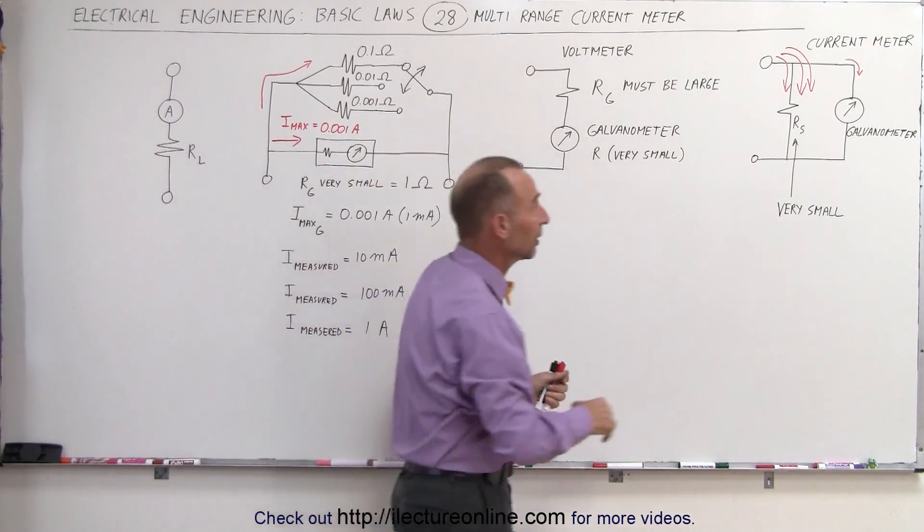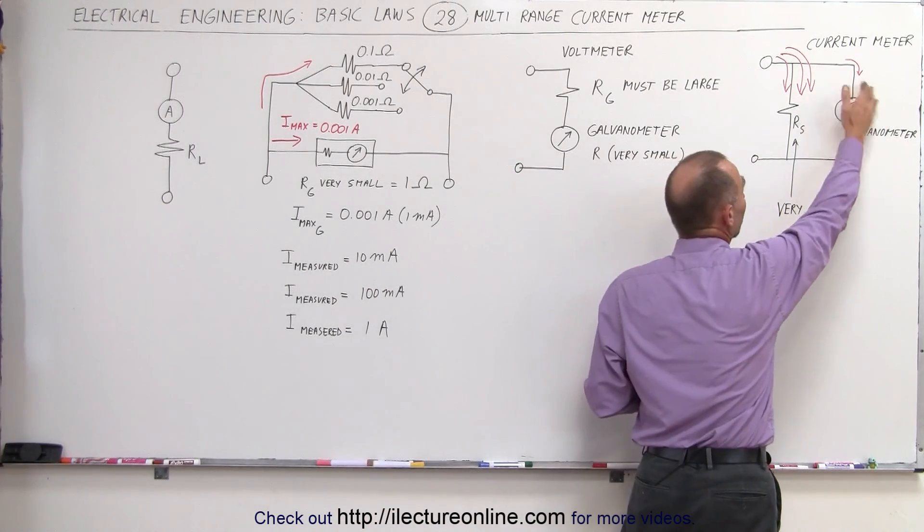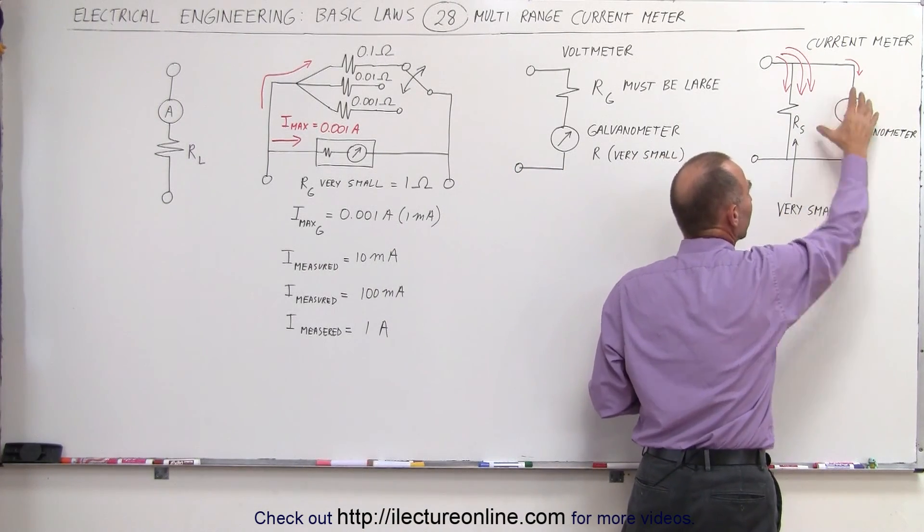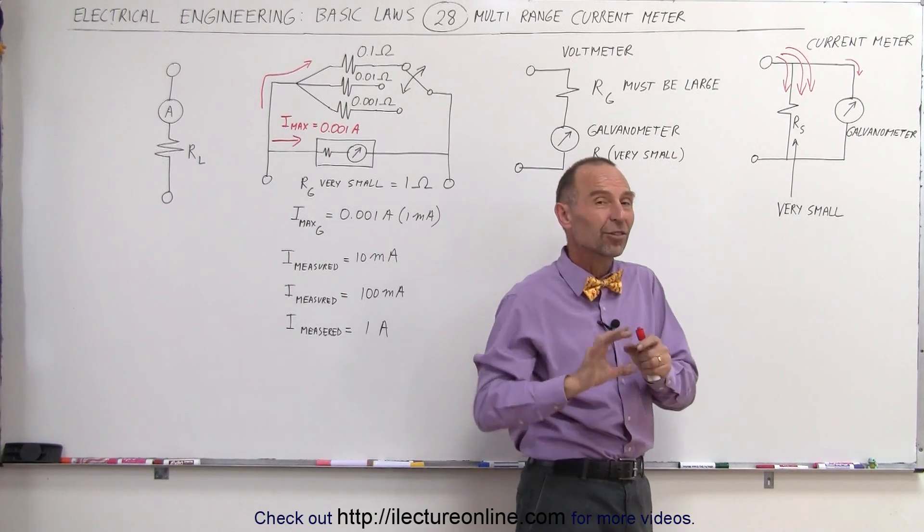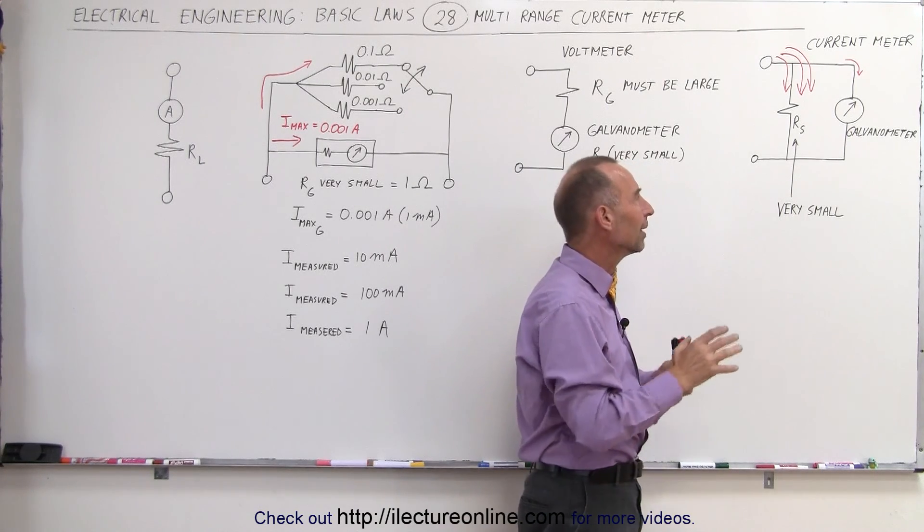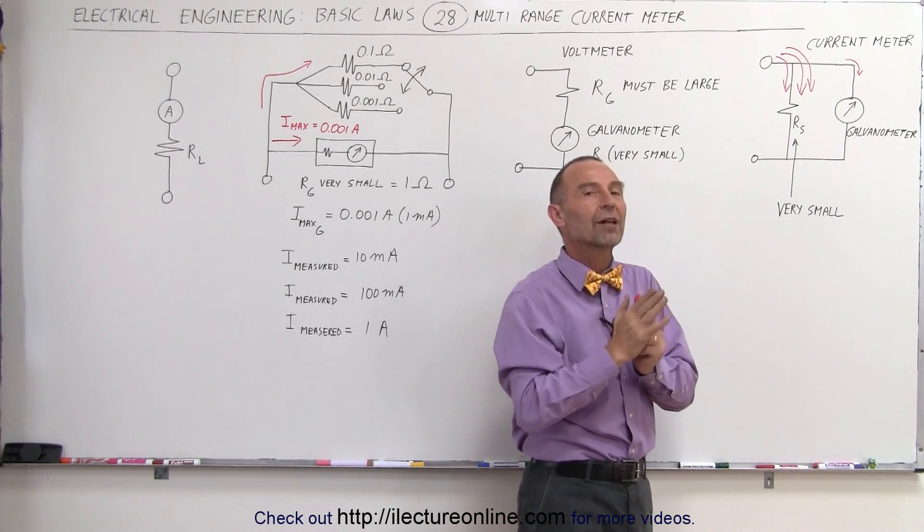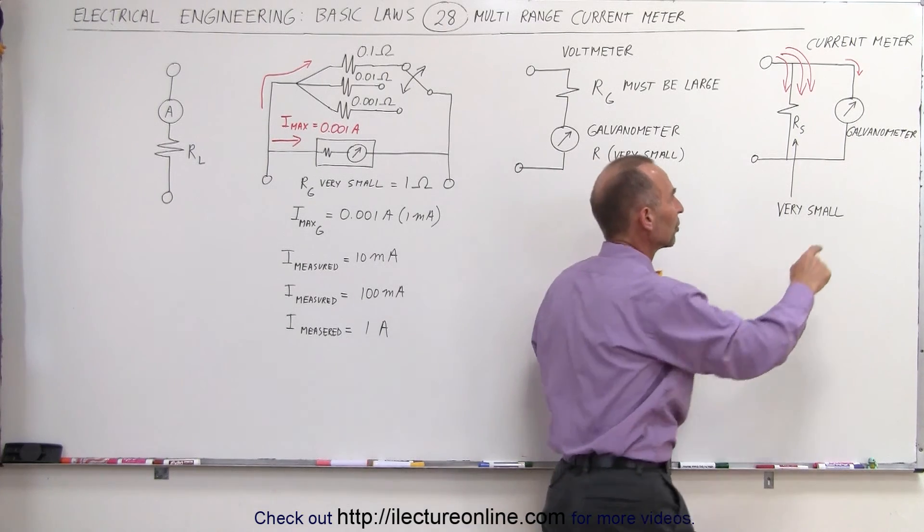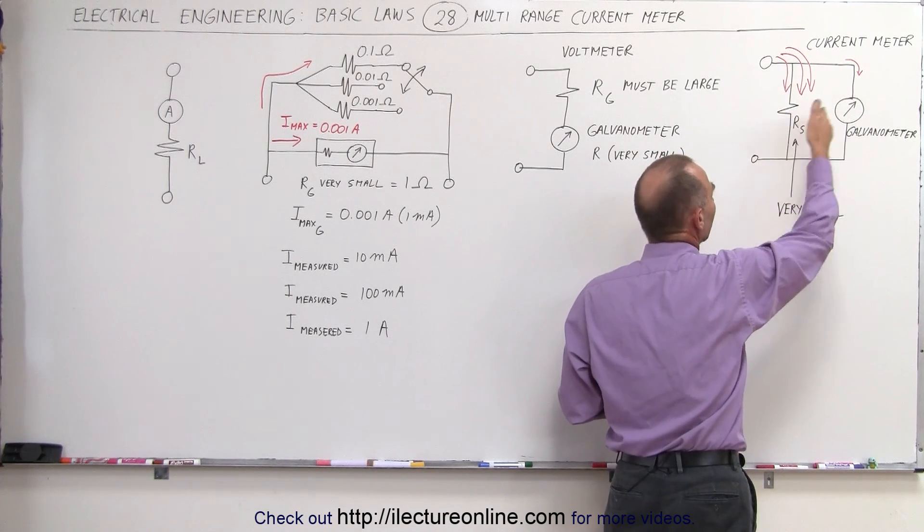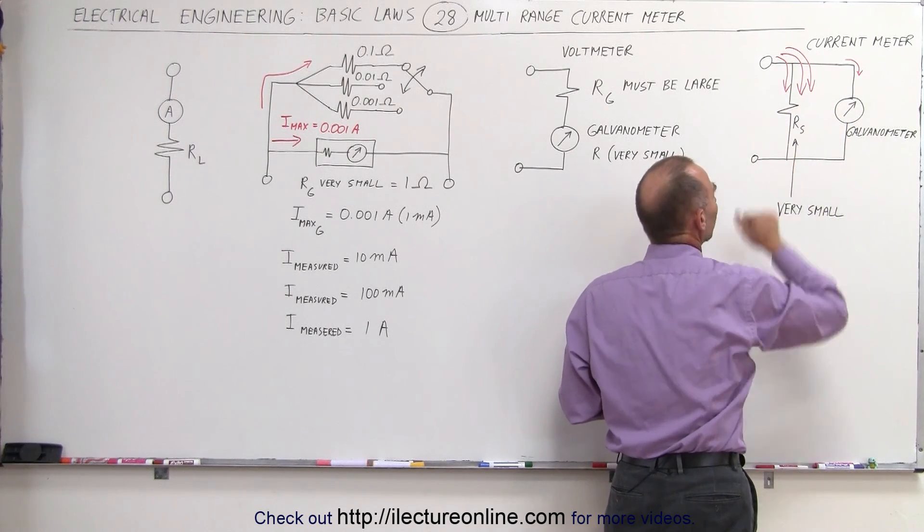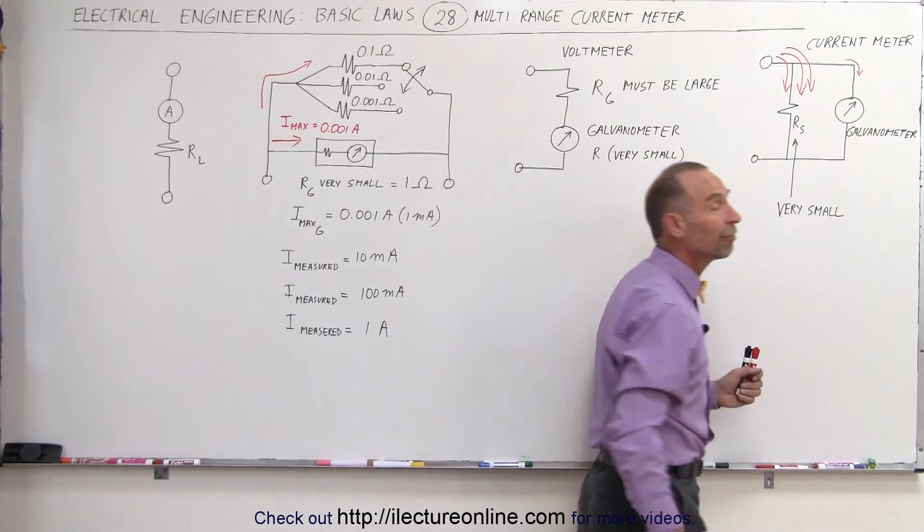The basic premise of a current meter is that it has a galvanometer, a measure portion of the current meter. That is, of course, in the old-fashioned analog meters. In digital meters it's a similar setup, but we no longer use the actual galvanometer. We use a different way of measuring the current. And then we have a resistor that is in parallel to the galvanometer that is called a shunt resistor. And the resistor must be very small.